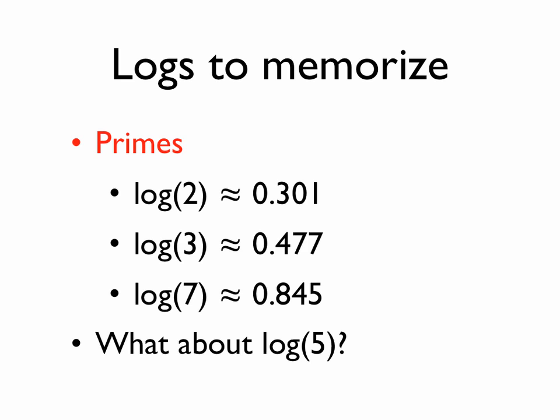Memorize those primes, the logs of those primes, and then add them back together. So in this case, log of 2, 3, and 7 are 0.301, 0.477, and 0.845 respectively. But what about log 5? I didn't include that prime number here.